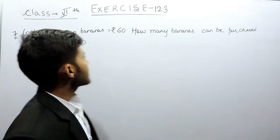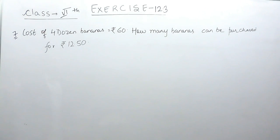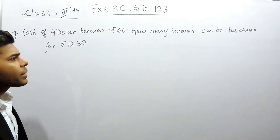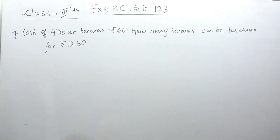Hello everyone, this is the seventh question of exercise 12.3. The question says that the cost of four dozen bananas is rupees 60, so we have to tell how many bananas can be purchased for rupees 12.50.